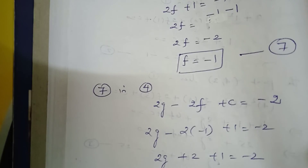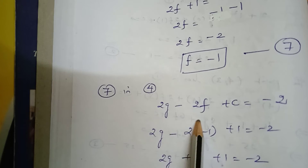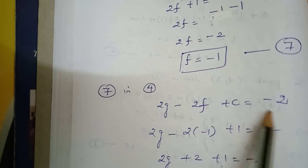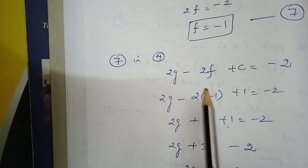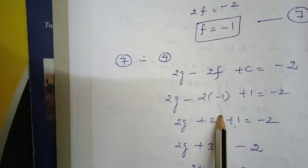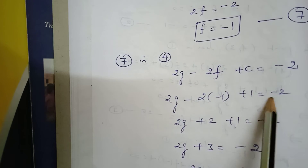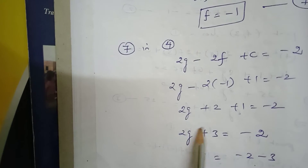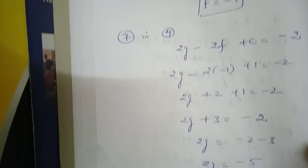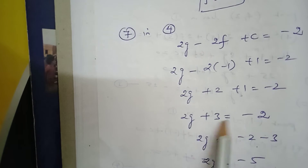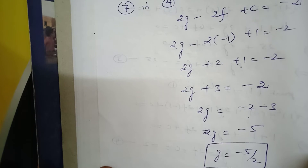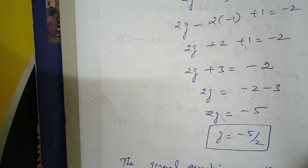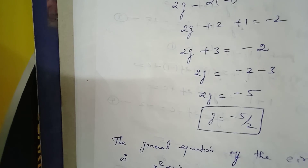Substituting equation 7 (f = -1) into equation 4: 2g - 2f + c = -2, so 2g - 2(-1) + 1 = -2, giving 2g + 2 + 1 = -2, so 2g + 3 = -2, therefore 2g = -5, and g = -5/2.